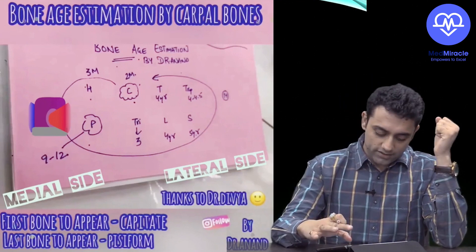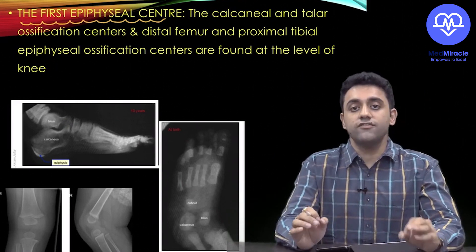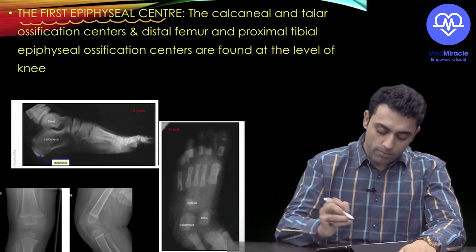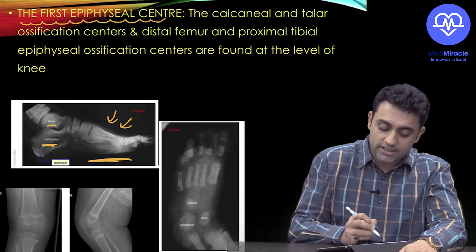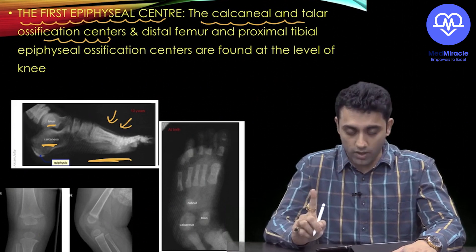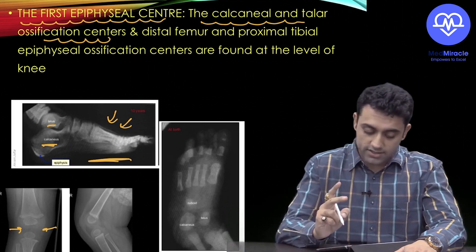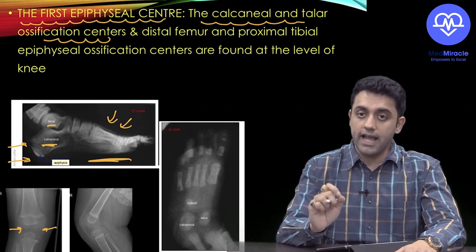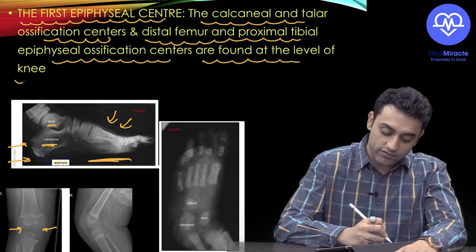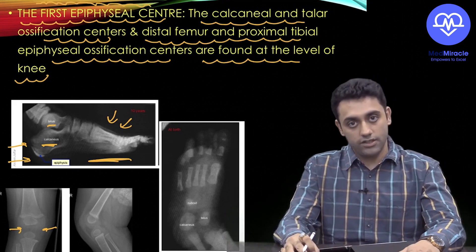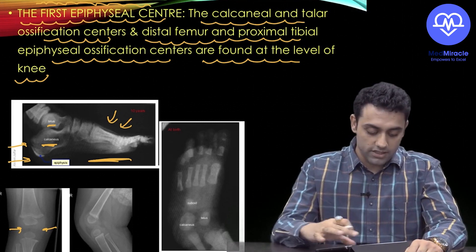Next important point: the first epiphyseal centers. A PG exam question asks where the first epiphyseal center appears. On a foot X-ray, you can see the Calcaneum and Talar ossification centers. At the knee level, the Distal Femur and Proximal Tibial epiphyseal centers are also present at birth. These are the first epiphyseal centers you need to know for entrance exams.